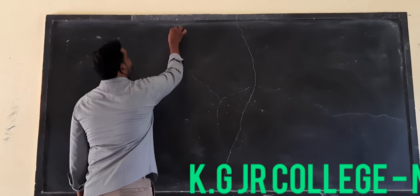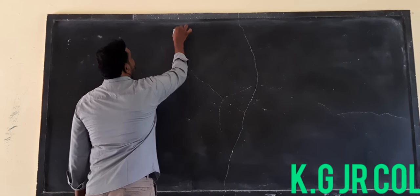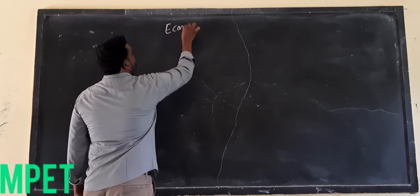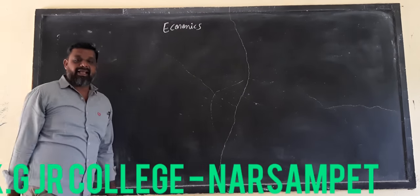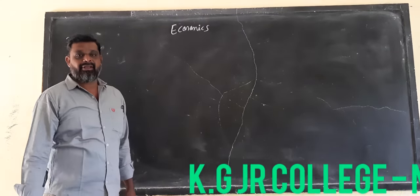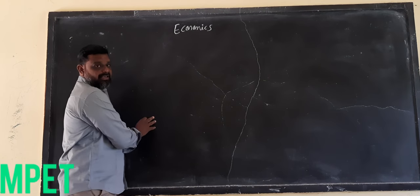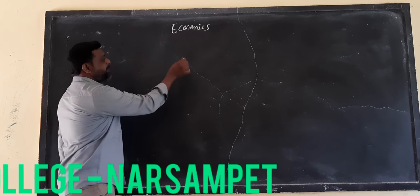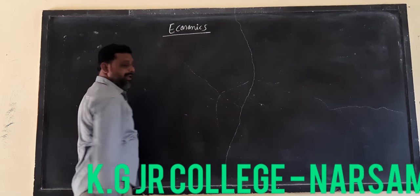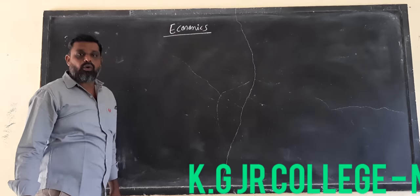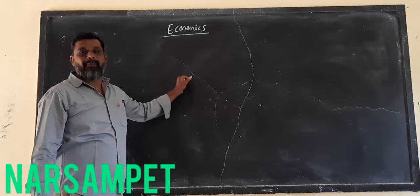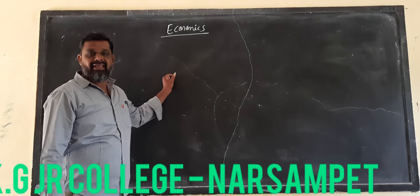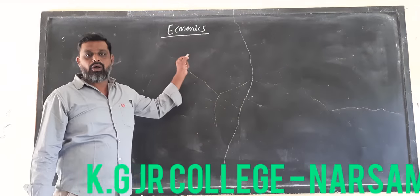Economics is an English word. It is derived from two Greek words: Okos and Neiman. Okos means household and Neiman means management. So economics is totally about household management.